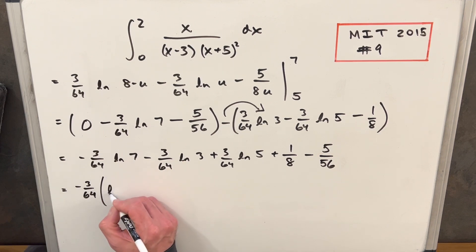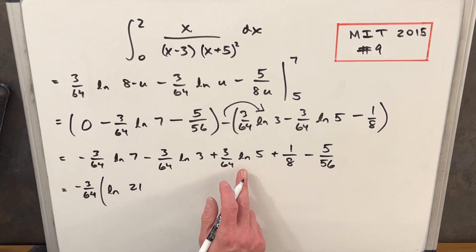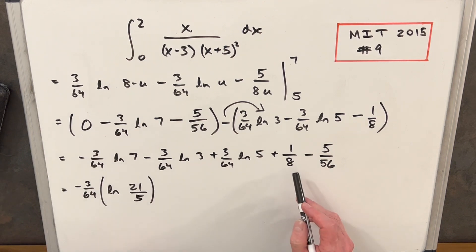But then when we do that, so we'll have our natural log and by the property of natural logs, we can kind of multiply and divide. So our natural log of seven is going to be positive and a natural log of three is positive. So that's going to be seven times three or 21. But then we have this term is going to be minus. We're going to have a five in the denominator.